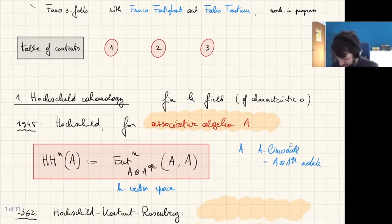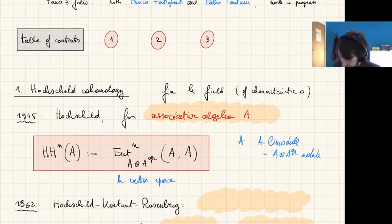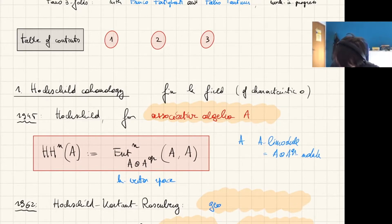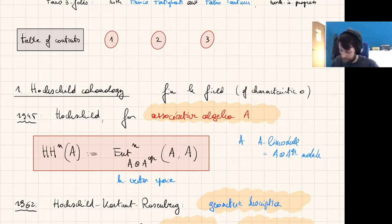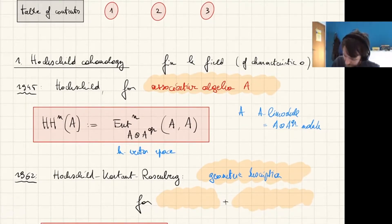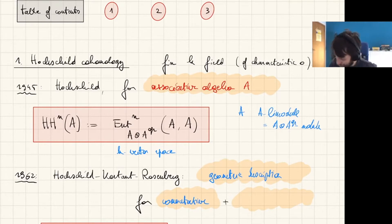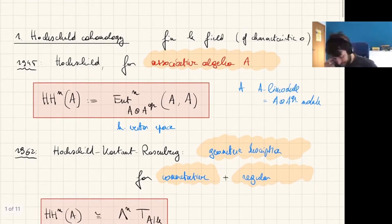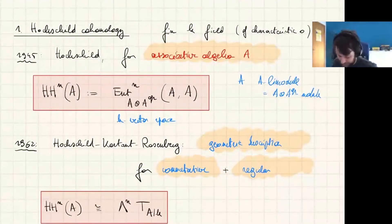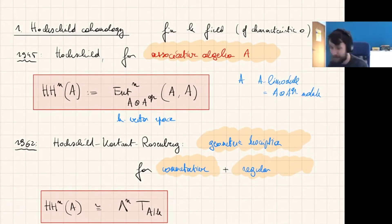One can develop the story in different directions. The first is the Hochschild-Kostant-Rosenberg decomposition, a result from about 17 years later, which gives a geometric description. For this to make sense we need A to be commutative and regular, and in that case we have an isomorphism involving the tangent bundle and its exterior powers — a projective module — giving a link to algebraic geometry.